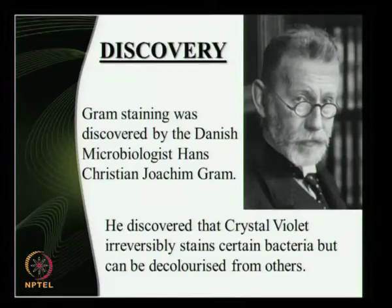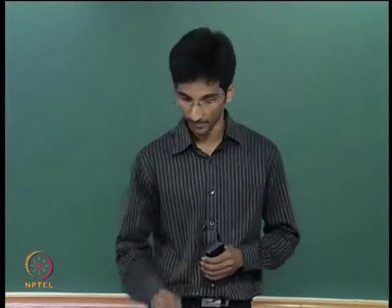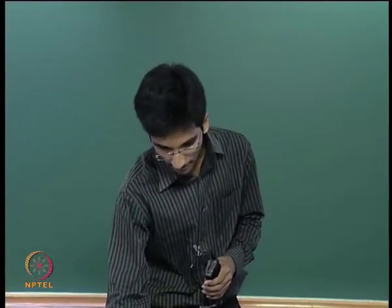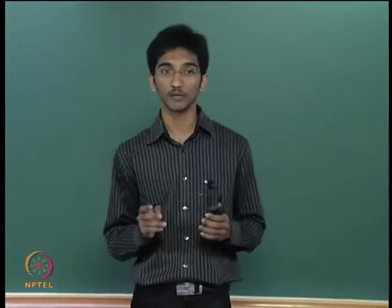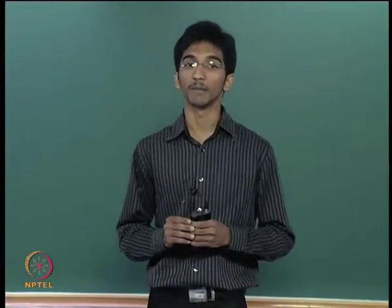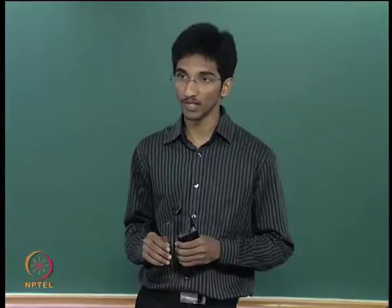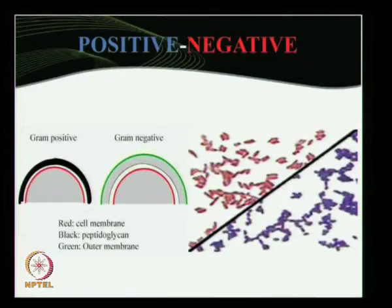Crystal violet, a dye, which irreversibly stains one class of bacteria but not the other, forms the basis of this technique. Bacterial cell walls are mainly made up of two biomolecules, namely peptidoglycan and lipopolysaccharide. Based on the amounts of these molecules present in a cell wall, they are distinguished into gram positive and gram negative.